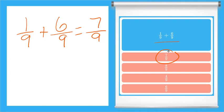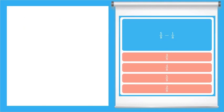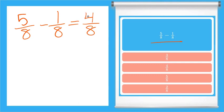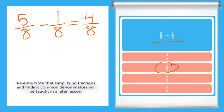Let's try another one. Here we have the subtraction problem five-eighths minus one-eighth. Remember, we're going to keep our denominator the same and just do five minus one, which gives us four. Four-eighths is our final answer.